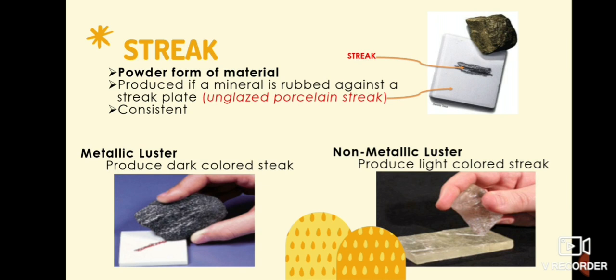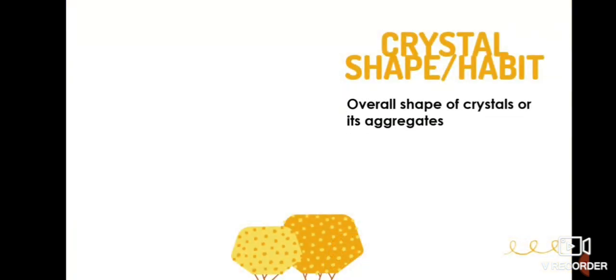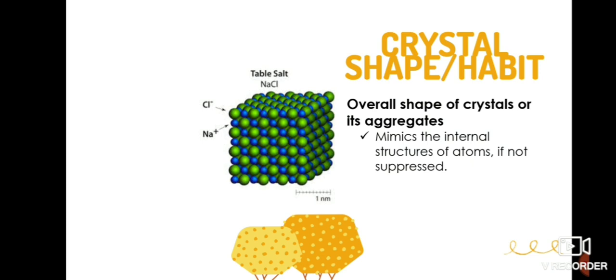After the optical property, now we have the crystal shape or habit, which refers to as the overall shape of the crystals or its aggregates. If not suppressed during its formation, minerals tend to mimic the internal arrangement of their atoms. Take NaCl, or halite, or most commonly known as table salt as an example. Halite has a cubic appearance due to the atomic arrangement of sodium and chlorine during its formation.